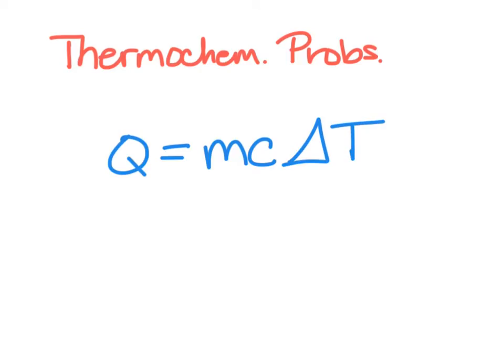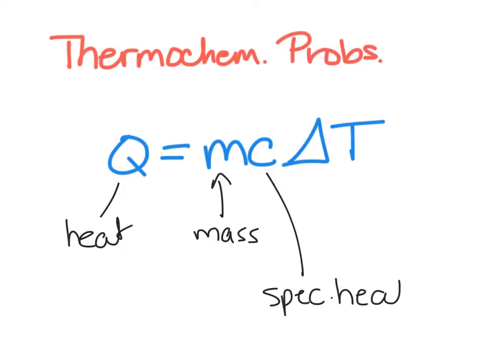In thermochemistry problems, it's important to remember the formula Q equals MC delta T, where Q is heat, M is mass, C is your specific heat capacity, and delta T is your change in temperature.